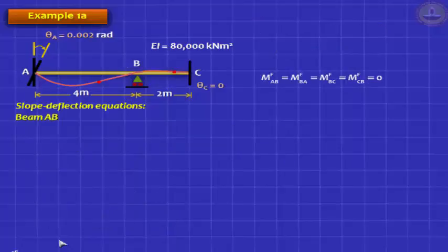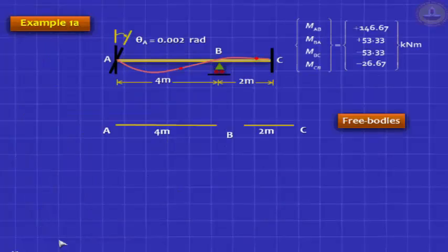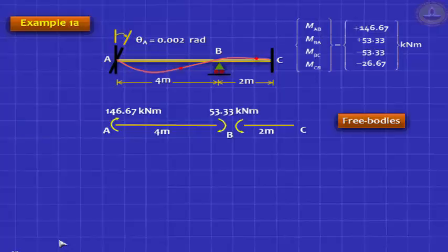Very simple. Equilibrium equation is, you can write this in matrix, is MBA plus MBC, and plug in those values, and you will get the answers. From the answers, you can interpret whether they are clockwise or anticlockwise. If it is positive, it is clockwise. If it is negative, it is anticlockwise. You got the answers there. MAB is plus 146.67, MBA is plus 53.33, MBC is minus 53.33, and MCB is minus 26.67.